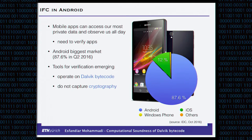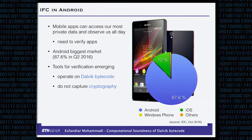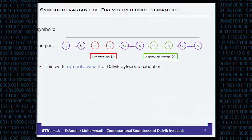However, these tools typically have a problem with capturing crypto. They make an over-approximation and are not sufficiently precise if crypto operations are involved. And that's where our work starts. We do not build a system, but we do work on this one step earlier. We devise Dalvik symbolic small-step semantics that is amenable to automated verification tools.